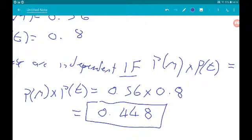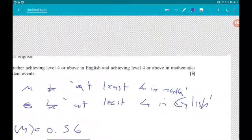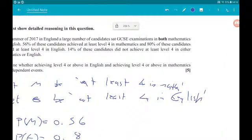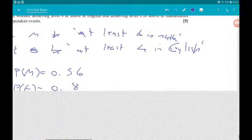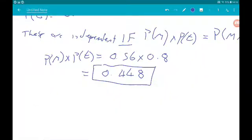Now then, we need to find the Intersection. So we know 14% of these candidates did not achieve at least 4 in either Maths or English. So that means the Probability of M union E, so the Probability of Passing Maths or English or both, is 1 minus 0.14. So 1 minus the lot that didn't pass either one. So that is 0.86.